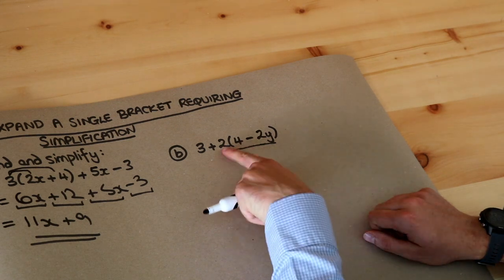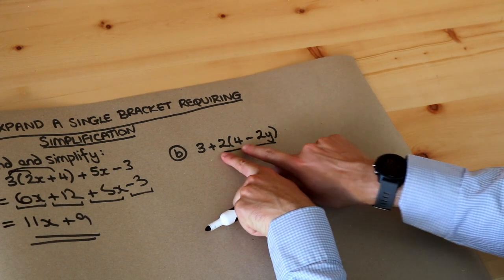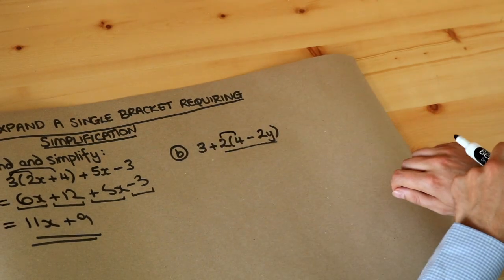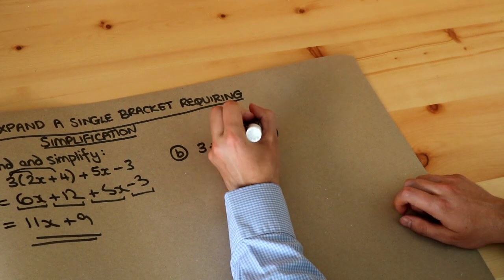So we do the same thing as before, the 2 gets multiplied by each of the things inside that bracket so the 2 times the 4 and the 2 times the minus 2y.